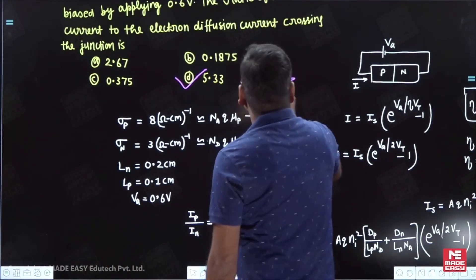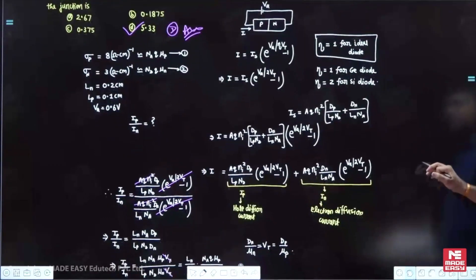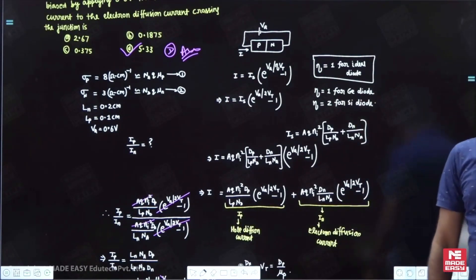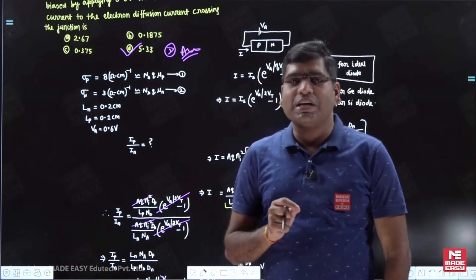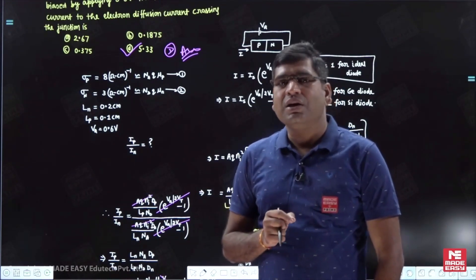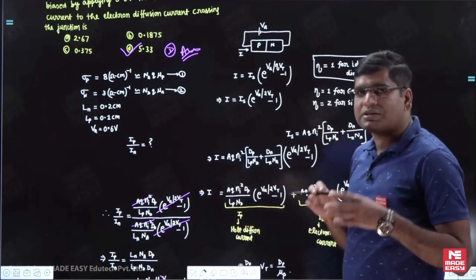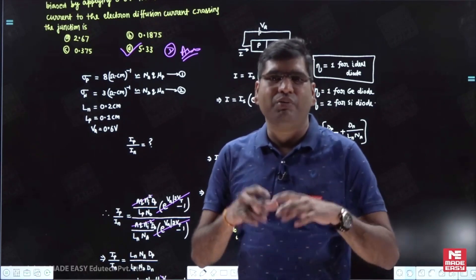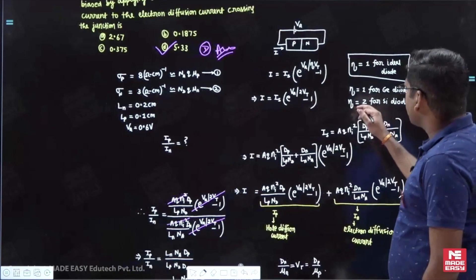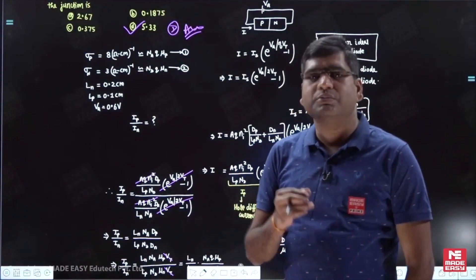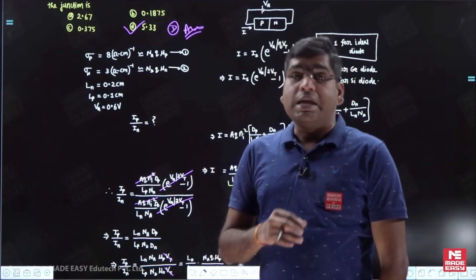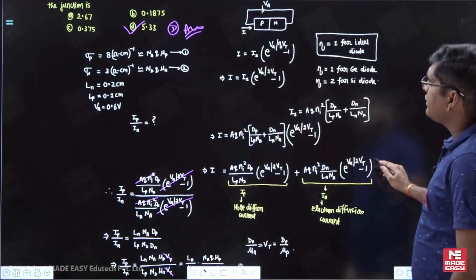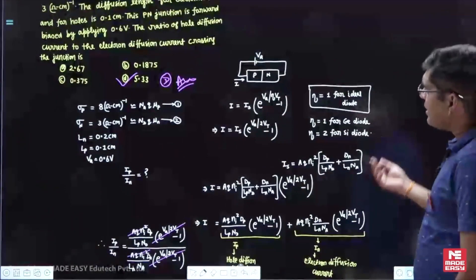It is important to remember: eta = 1 for ideal diode, eta = 1 for germanium diode, eta = 2 for silicon diode. The reason eta appears is to account for recombination inside the depletion region. You just need to know these values: silicon gives eta = 2, germanium gives eta = 1, and if nothing is mentioned, assume ideal PN junction with eta = 1.